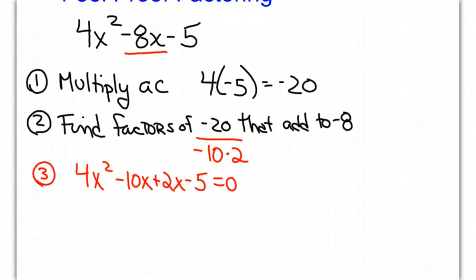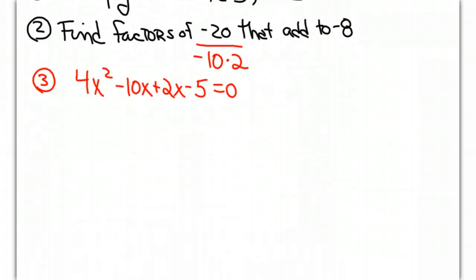Now we're going to group the first two terms together. We have 4x squared and 10x, and these two terms have a 2 and an x in common, so we factor out the 2x and that leaves us with 2x minus 5.